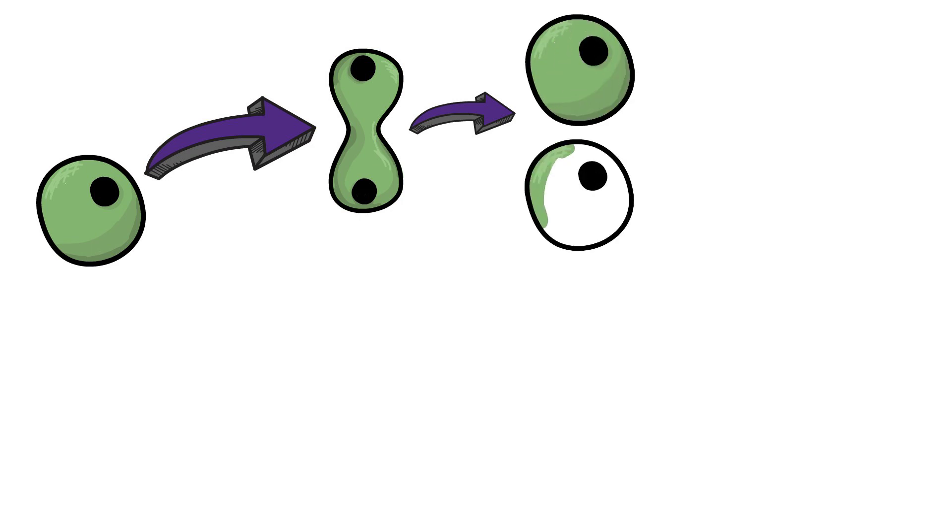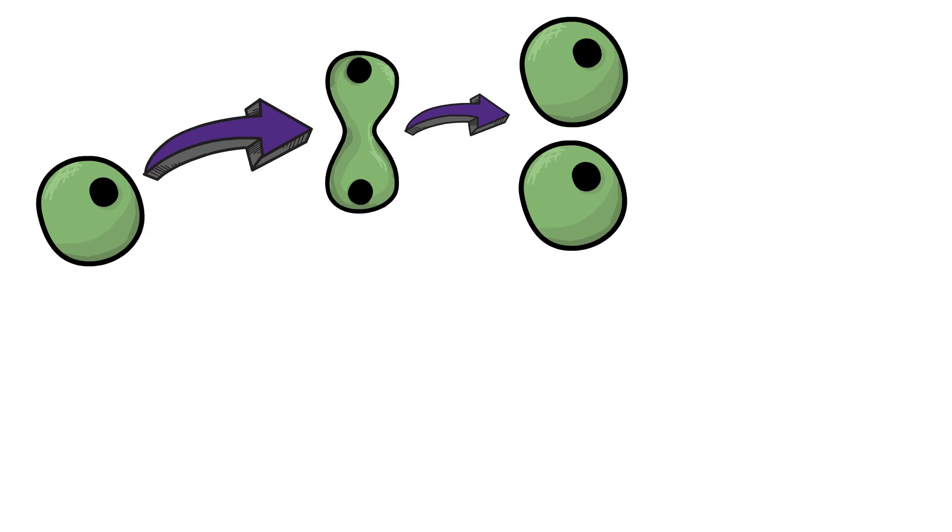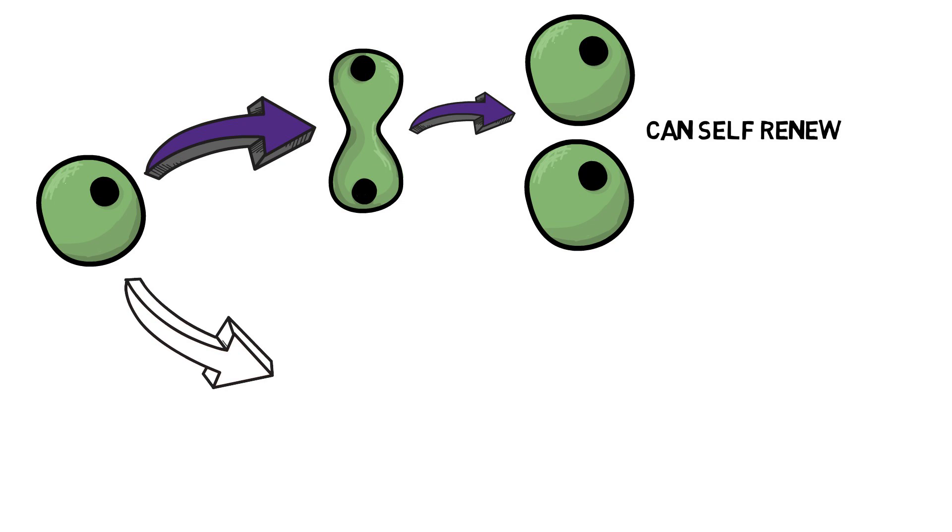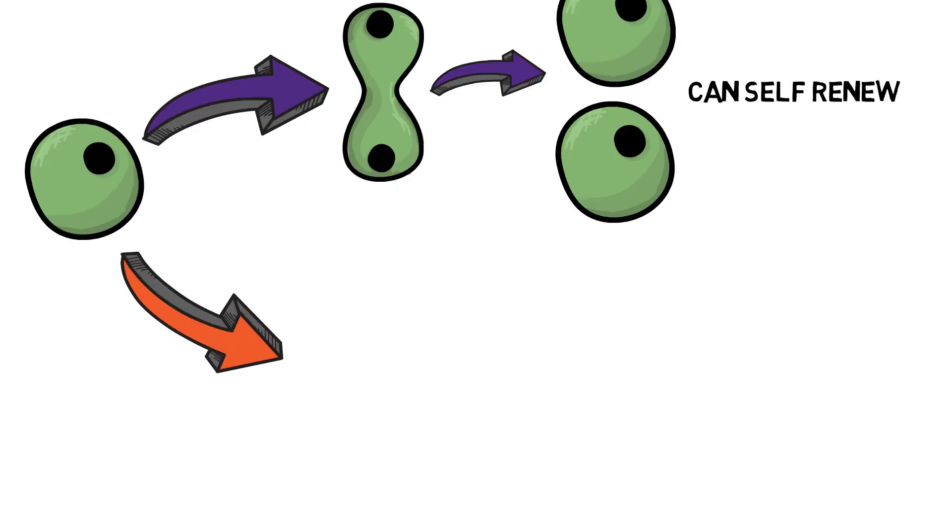So first we need to look at what makes a stem cell different from a normal cell. There are two important characteristics that define this. First, they are unspecialized cells which are able to self-renew through cell division even if they have not replicated for a long time, meaning they can continually produce exact copies of themselves. And secondly, under certain conditions they can be induced to become differentiated cells, meaning the genes that were all available have been either turned off or kept on, creating different specializations of a cell and this allows the cell to have specific functions.